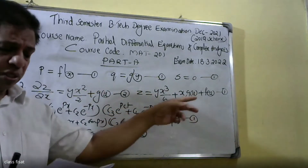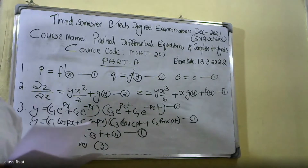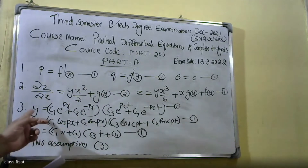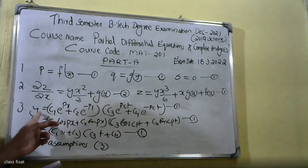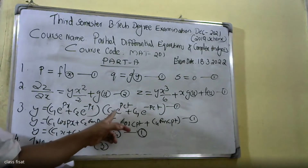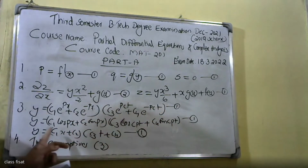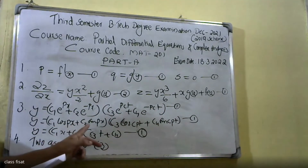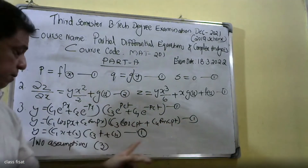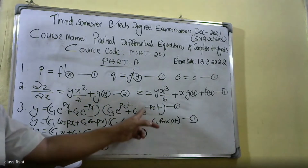Write the three possible solutions of the one-dimensional wave equation. The first solution: y is equal to c1·e^(px) + c2·e^(−px), c3·e^(pct) + c4·e^(−pct). The second solution: y is equal to c1·cos(px) + c2·sin(px), c3·cos(pt) + c4·sin(cpt). Then y is equal to (c1·x + c2)(c3·t + c4).